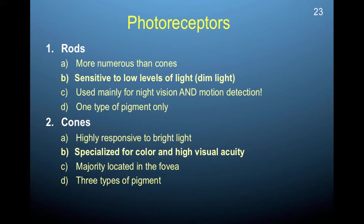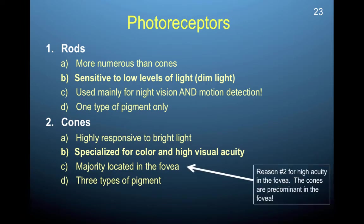Cones, on the other hand, are highly responsive to bright light, and they are specialized for color and for high visual acuity. They are mainly located in the fovea, and they have three types of pigment so that they can process color from three different types of wavelengths. This is also the reason for high visual acuity in the fovea — the cones are predominantly in this area.